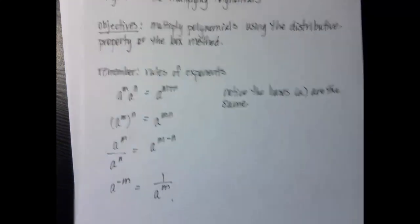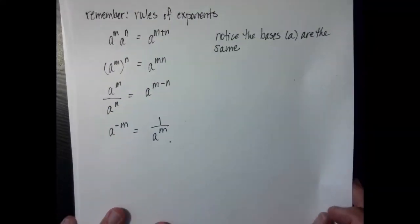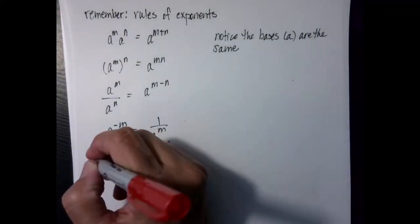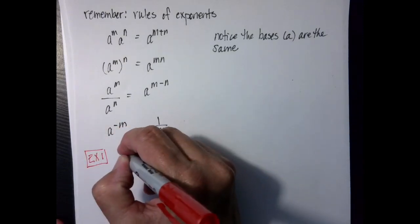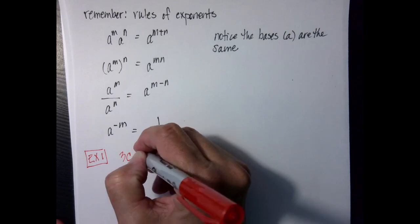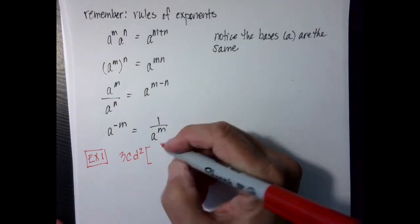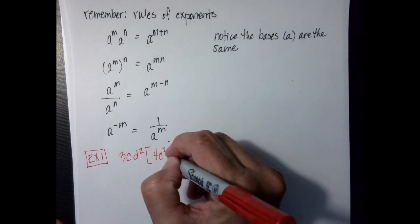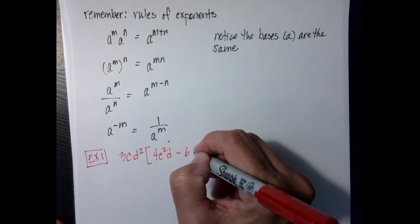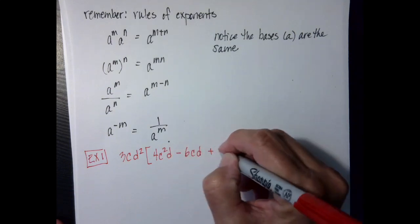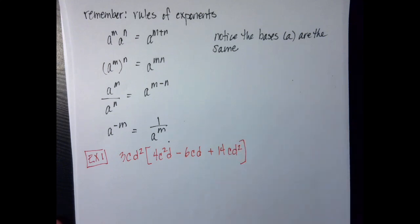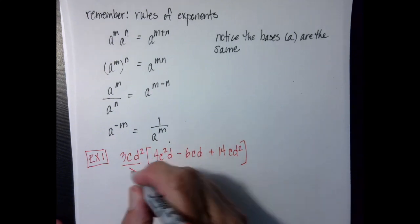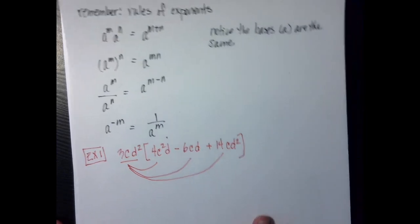In theory, you've learned the distributive property near the end of Algebra 1, and so we're just going to go back and spend a little bit of time reviewing that. So if I have 3cd squared and I'm going to multiply by 4c²d minus 6cd plus 14cd squared — let's do some math. I'm going to distribute this term to each one of the terms on the inside.